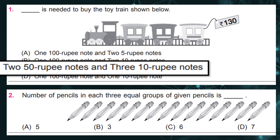The number of pencils in each of three equal groups of the given pencils is — answer: a, 5.